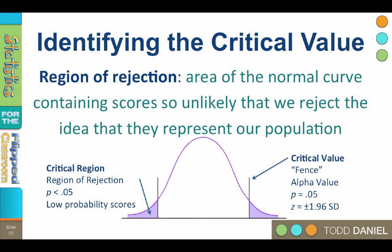Means in the region of rejection are so unrepresentative of the original population that it is a much better bet that they represent some other population.